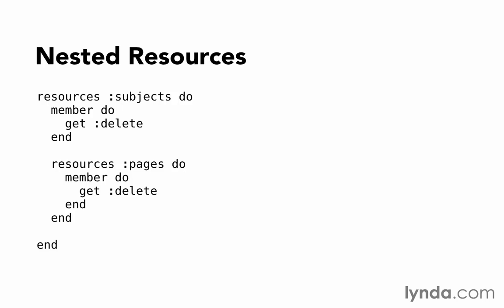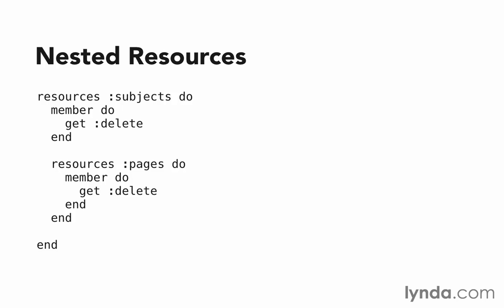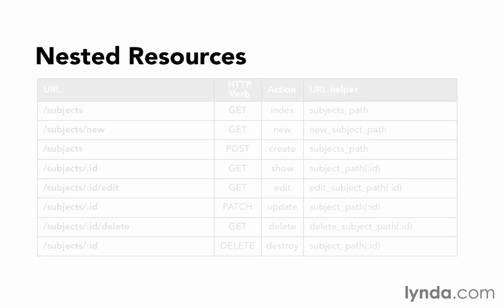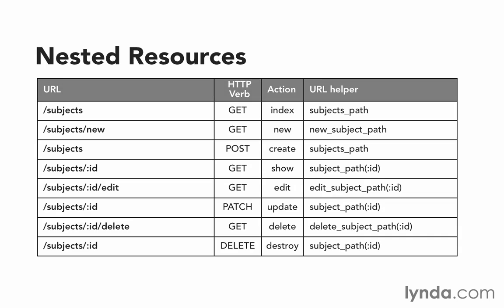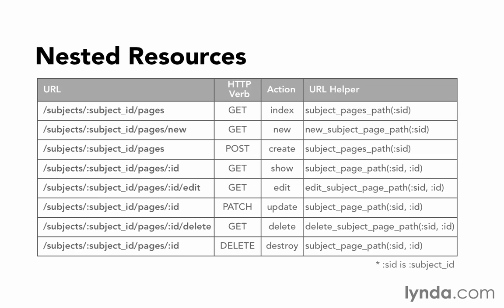It's actually making some pretty big changes. We still get our regular routes that we're used to. For example, for subjects, we would have subjects_path as a GET request that would take us to the index action, and subjects_path with an ID as a GET request would take us to the show action. But in addition to those regular routes for subjects, we would also get nested route helpers for our pages.